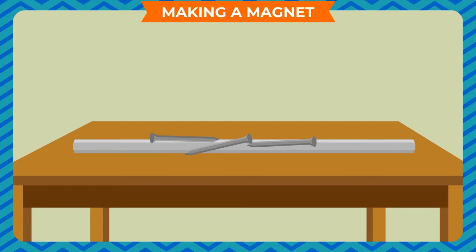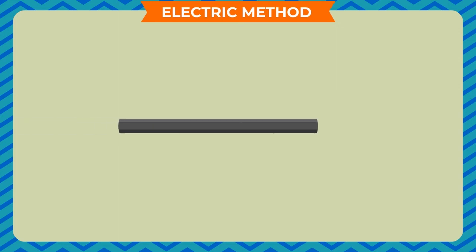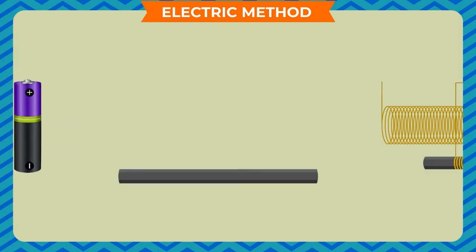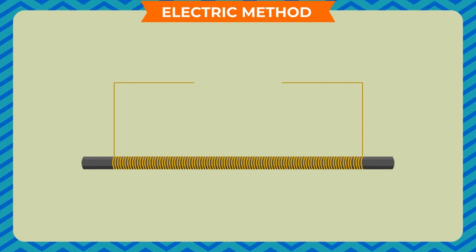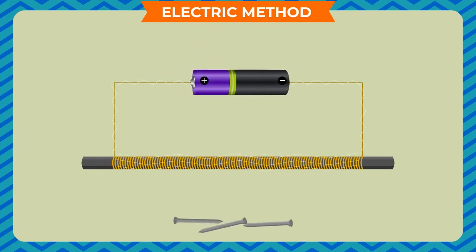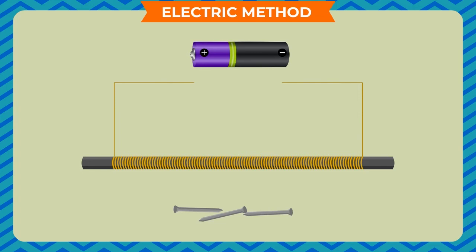If it attracts, your magnet is ready to use; if not, repeat the process further until it can attract the pin or iron piece. Electric method: Take a short iron rod, thin insulated copper wire and a battery. Wrap the copper wire around the iron rod to make copper coils on it. Connect the two ends of the wire to the electrodes of the battery. When you touch a pin or iron piece with this copper-coiled iron rod, the rod attracts them. This is due to the flow of electric current through the copper coil, which develops a magnetic field. When you remove the connection and take the iron rod near iron pieces, it does not attract them because the electric current has stopped. Thus, you can make a magnet using electricity.